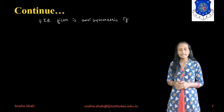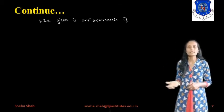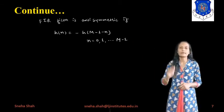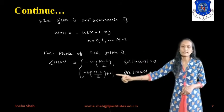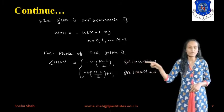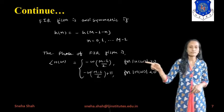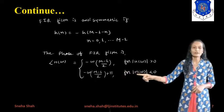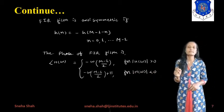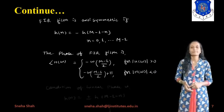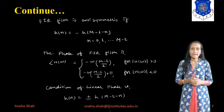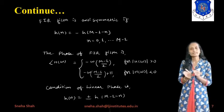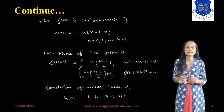If the FIR system is anti-symmetric, its value will be negative: h(n) = -h(M-1-n) for n = 0, 1, ..., M-1. The phase of the FIR system is angle(H(omega)) = -omega*(M-1)/2 when |H(omega)| > 0, and equals -omega*(M-1)/2 + pi when |H(omega)| < 0.